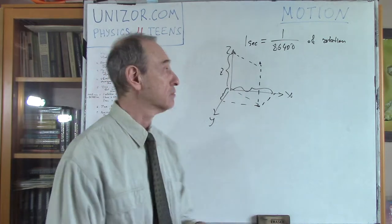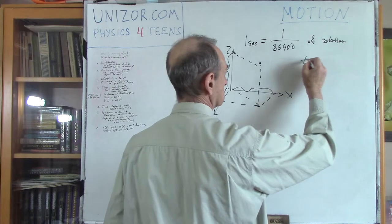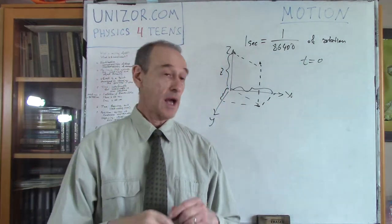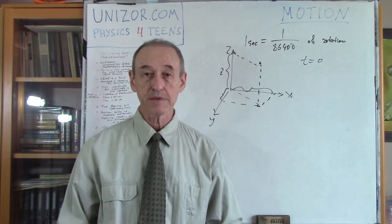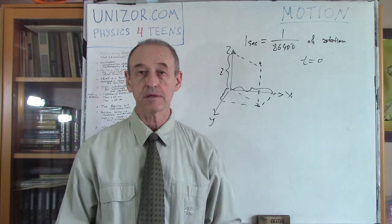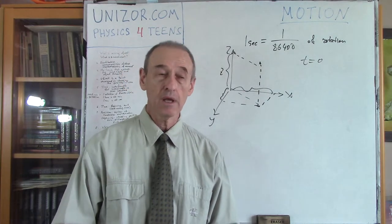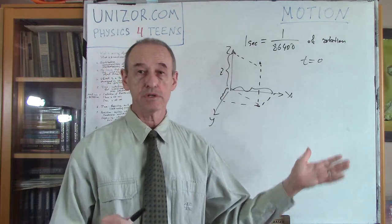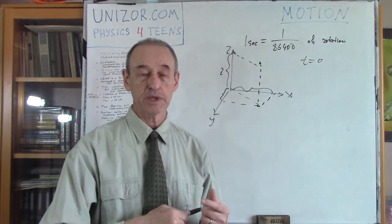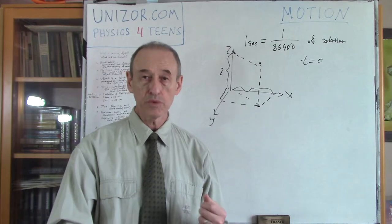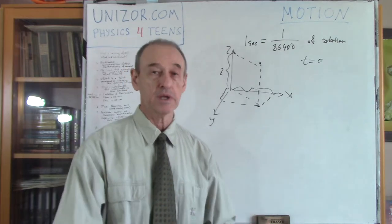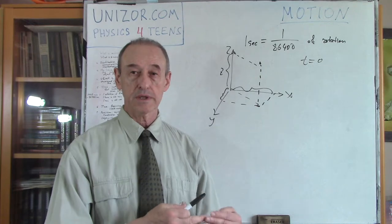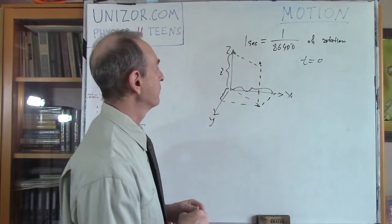Whenever an object starts moving, that particular starting time we can call time zero — t equals zero, the initial moment, the initial start of the movement. It is reasonable to assume that whenever the object starts moving, the beginning of time is the moment it starts.